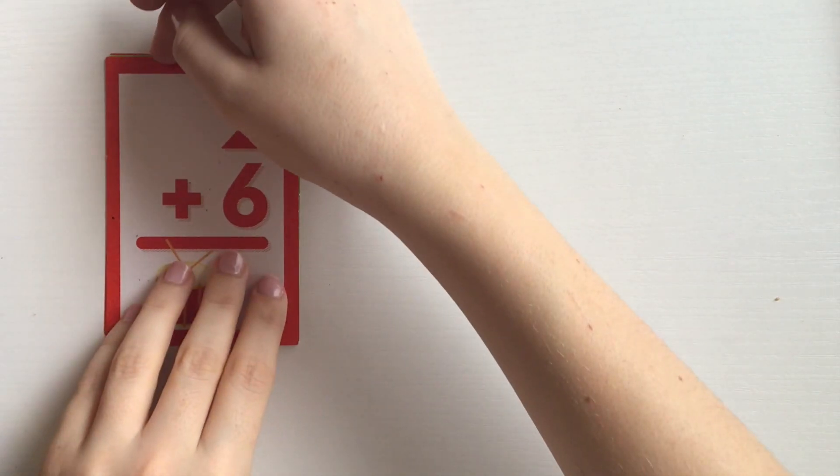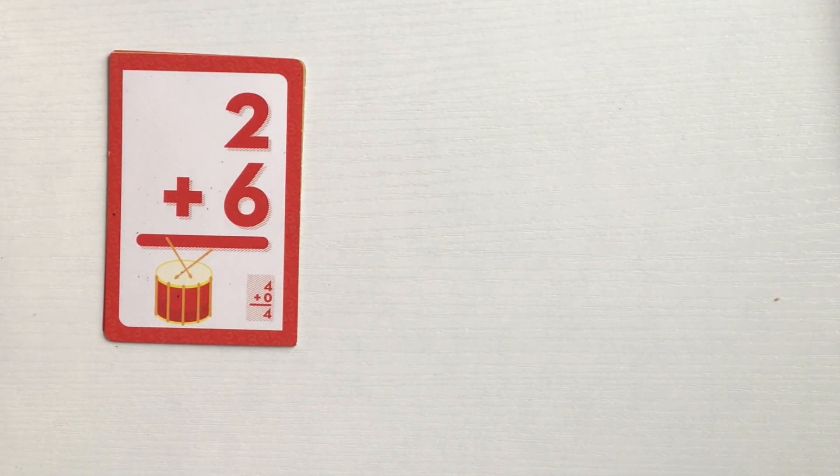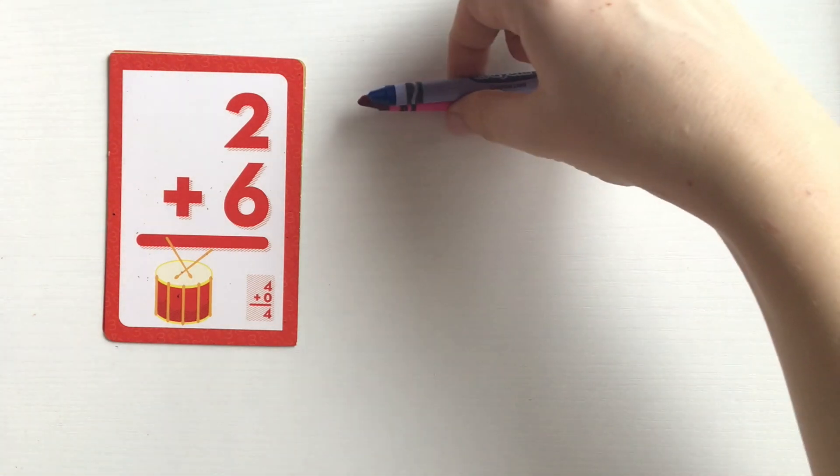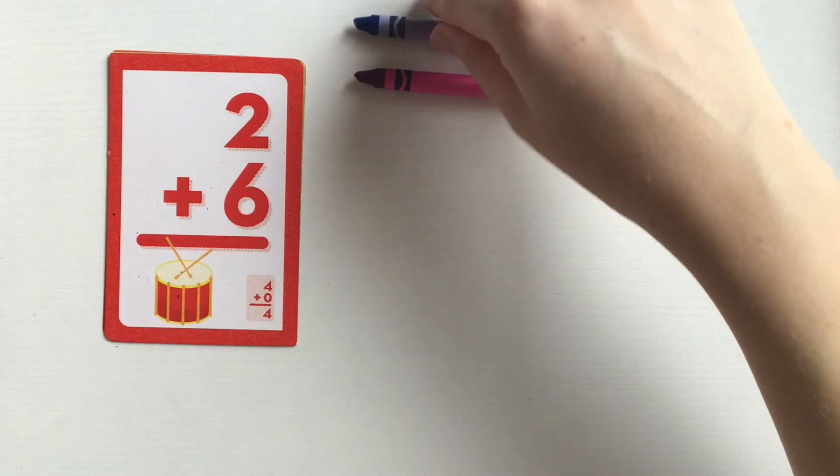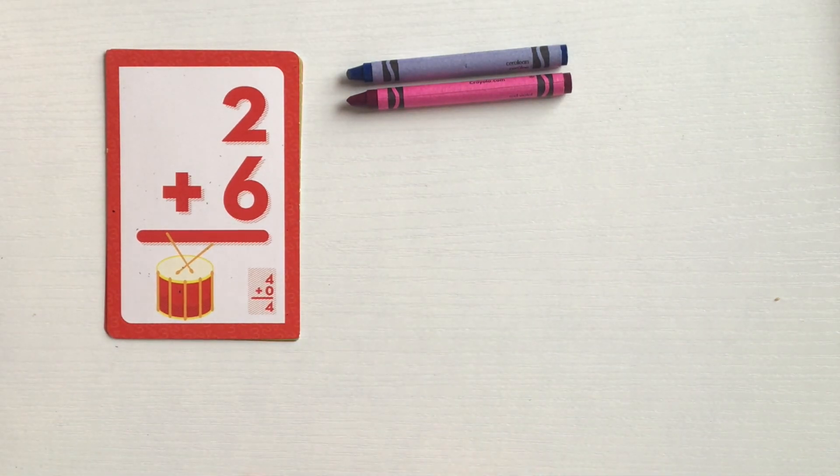Problem number three. Two plus six. I make my first group of two. One, two. One, two. And my next group will have how many?